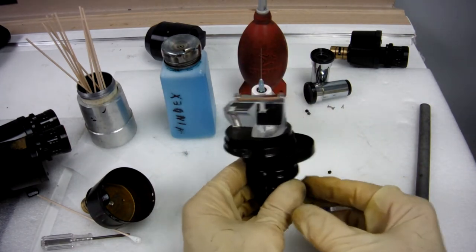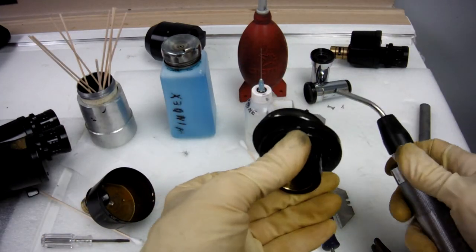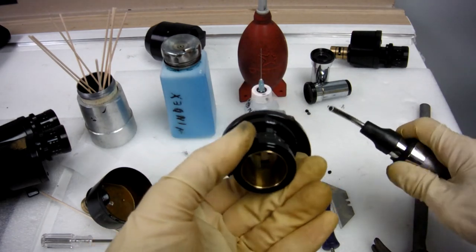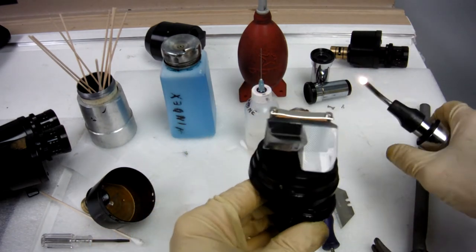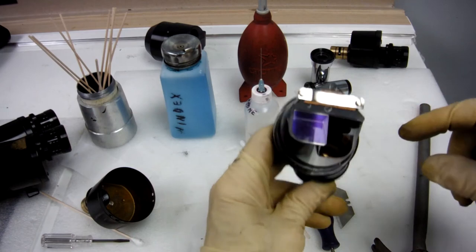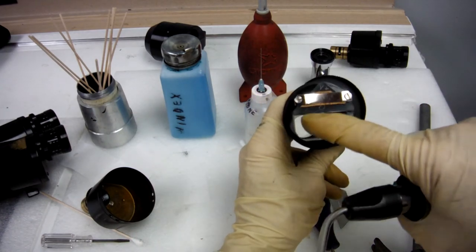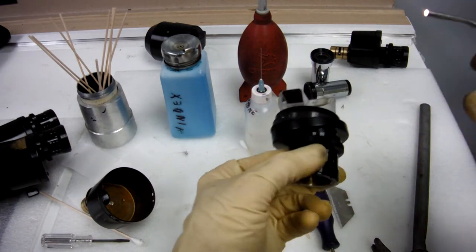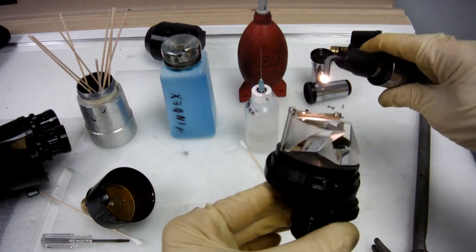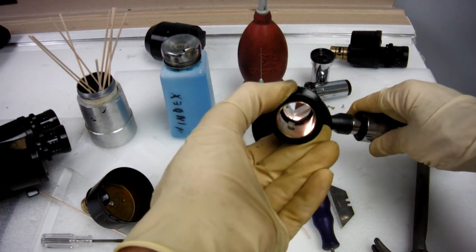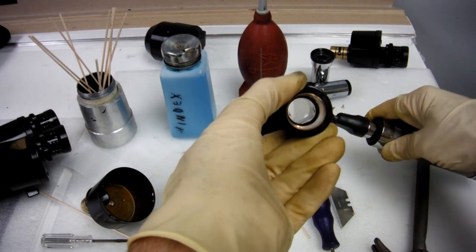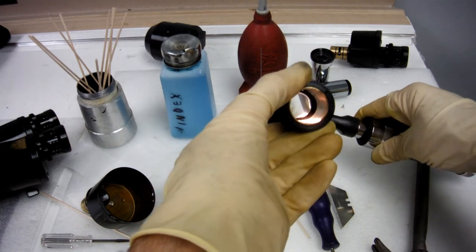When you're cleaning these prisms, using a light source is going to help you. If you point it at this area, it's going to shine through here, and you can check your progress as you're cleaning it.